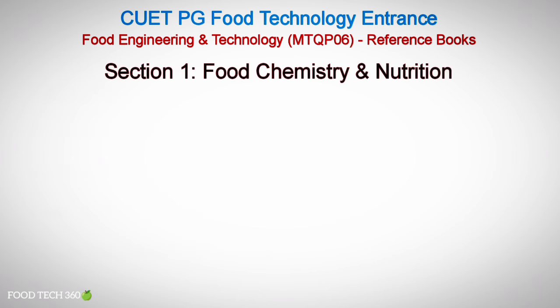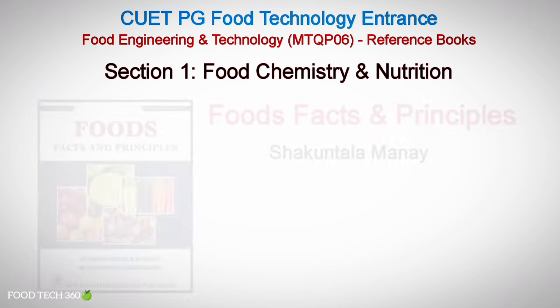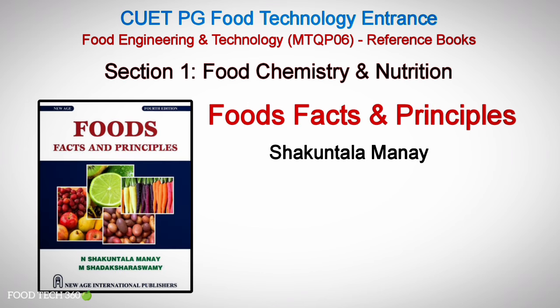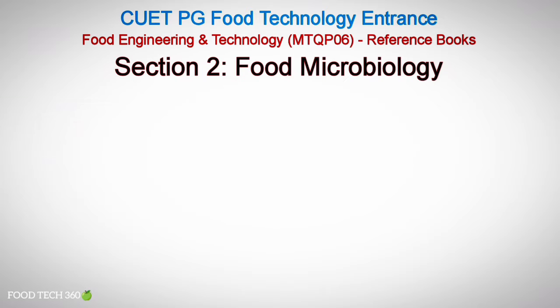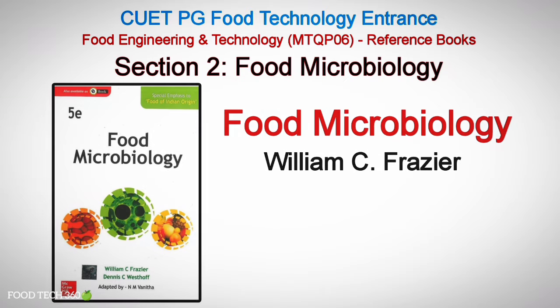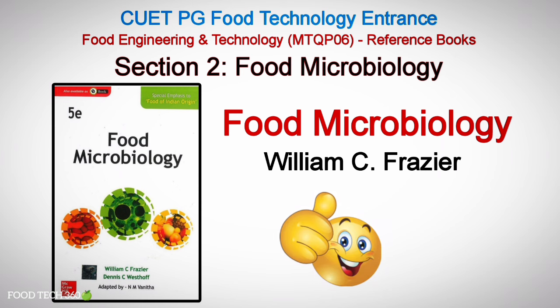For Section 1, Food Chemistry and Nutrition, you can refer to Food Facts and Principles by Shakuntala Amane. It is recommended as the best reference book for food chemistry related topics. For Section 2, Food Microbiology, you can refer to W.C. Frazier's Food Microbiology, recommended as the best reference book for food microbiology related topics.